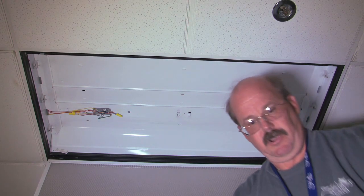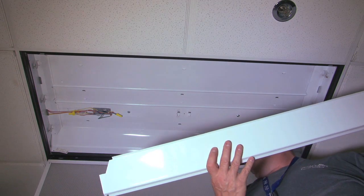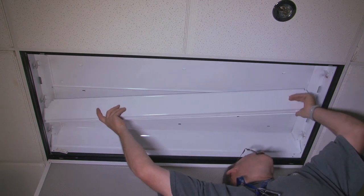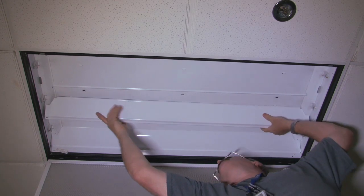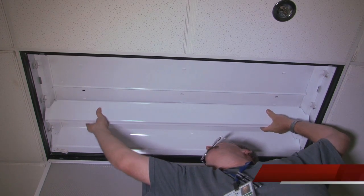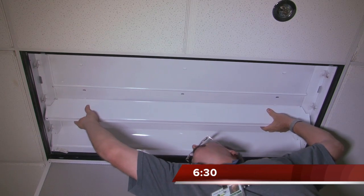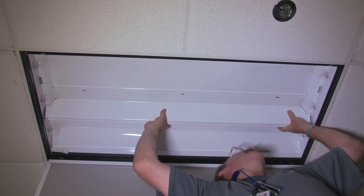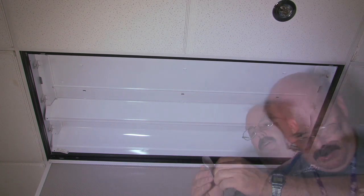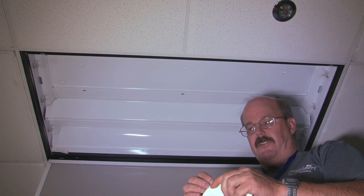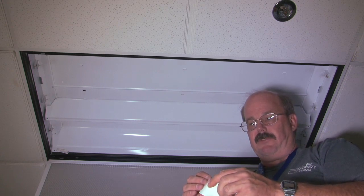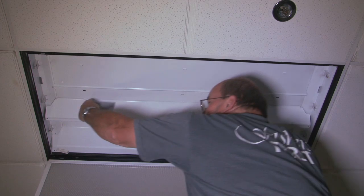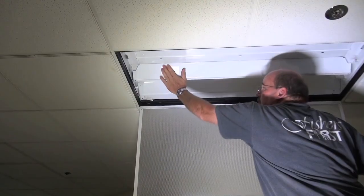So you take your ballast cover, put it back up here, clip it in. This is the notice to the next electrician that comes along that the ballast has been removed from this fixture. That way he doesn't come in with T12s or T8 bulbs and just slap them in there.